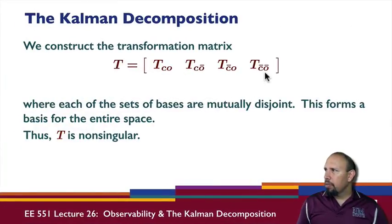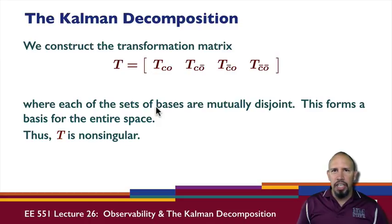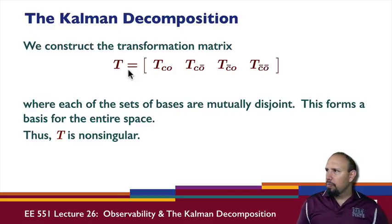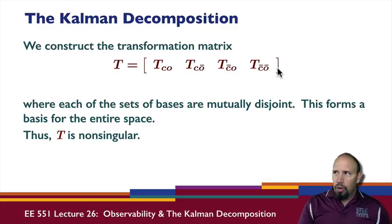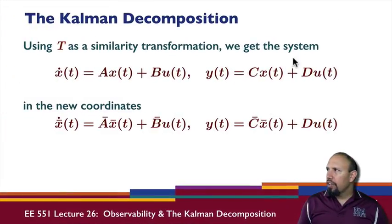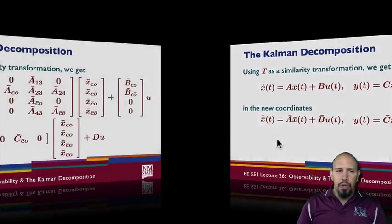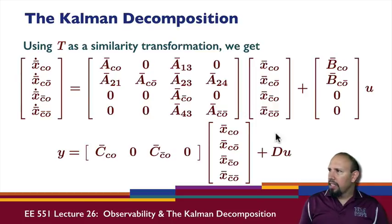We can take these bases and put them together in a matrix. A basis for a subspace is just a set of linearly independent columns. Since each of these subspaces are independent of one another, this combined matrix is a basis for the entire space, and so this matrix is non-singular. We can use that to create a similarity transformation — we take our system, put it into the new coordinates, and we get something of a block triangularized form with zeros appearing in various places.